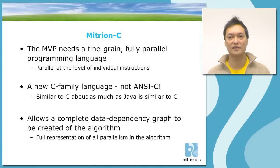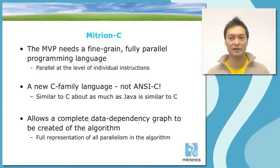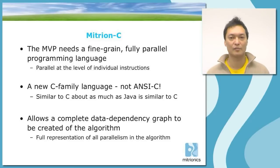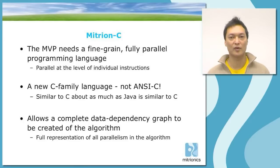The Mitron Virtual Processor needs a fine-grained, fully parallel programming language. It has to be parallel at the level of individual instructions because the MVP is a fine-grained processor. To achieve this, Mitronics has developed a new C-family language. It is not anti-C, but it is a different programming language in the C family. You could say that Mitron C is roughly as similar to C as Java is similar to C — most of the basic syntax is the same, and you will recognize yourself.